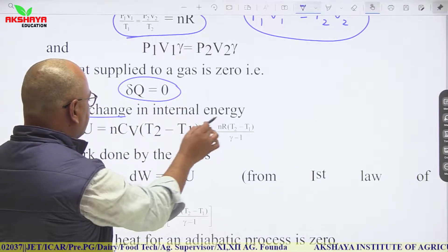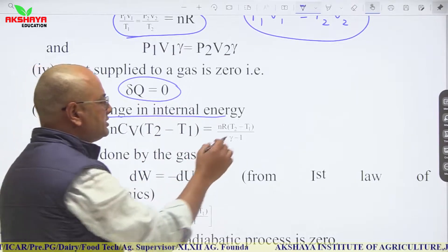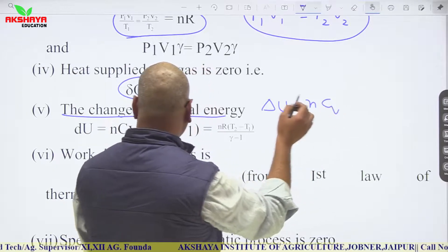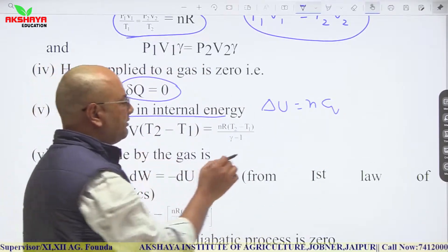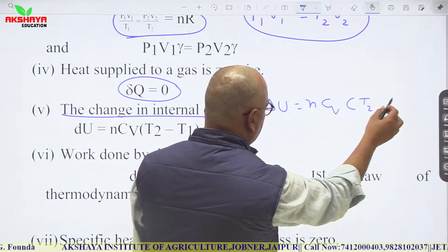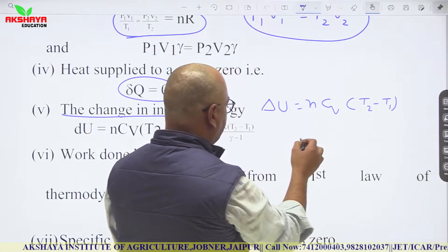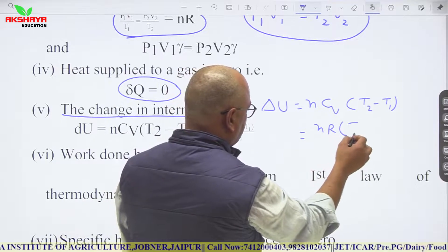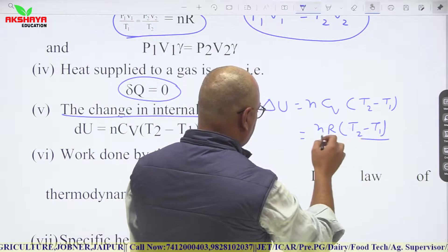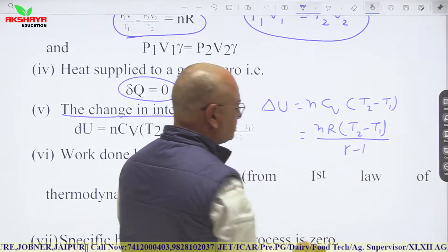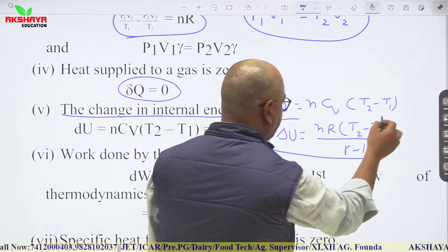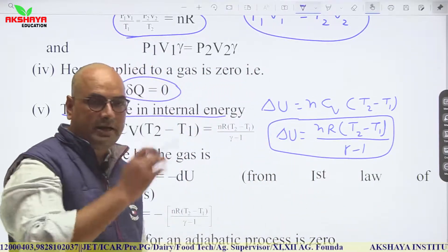Since there is no heat supplied or emitted, ΔQ = 0. The change in internal energy is ΔU = nCvΔT = nR(T2 − T1)/(γ − 1). This is the relation for change in internal energy in the case of an adiabatic process.